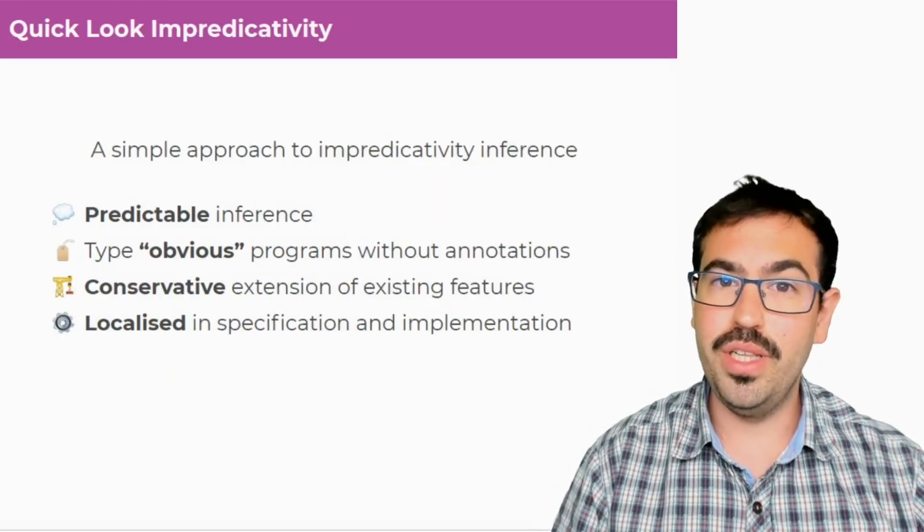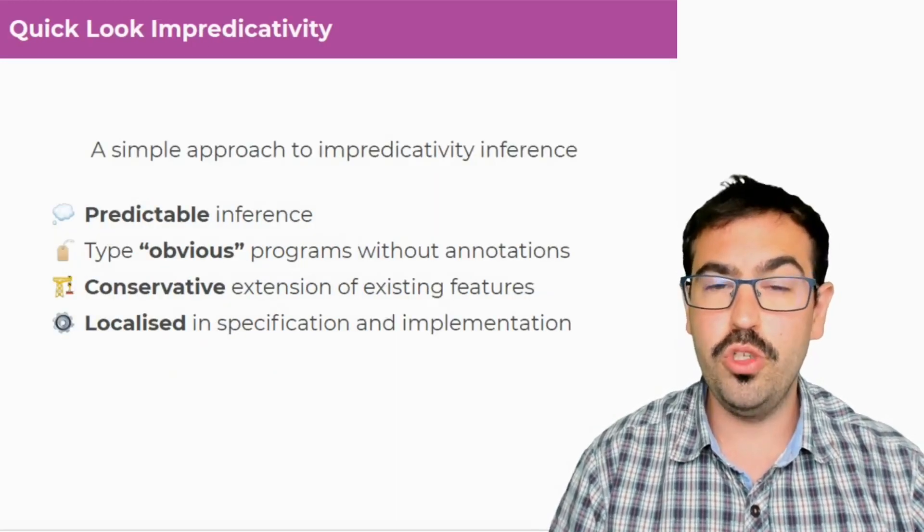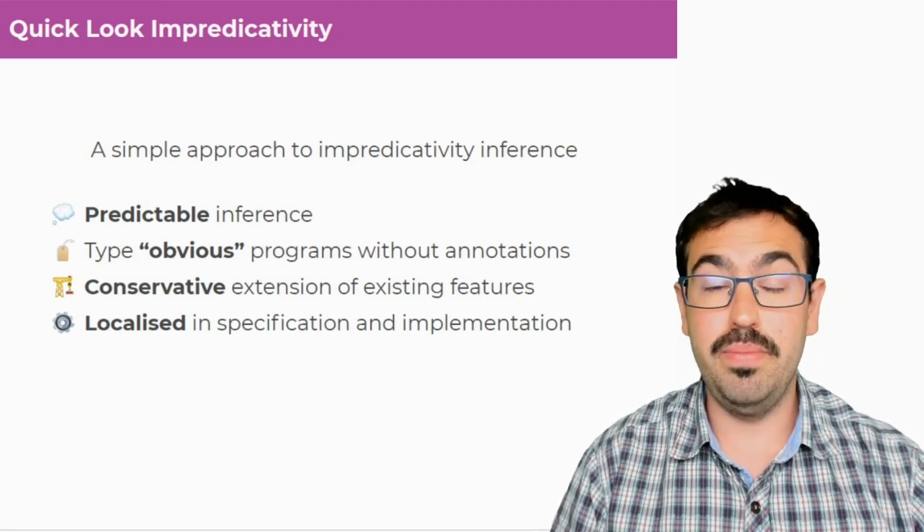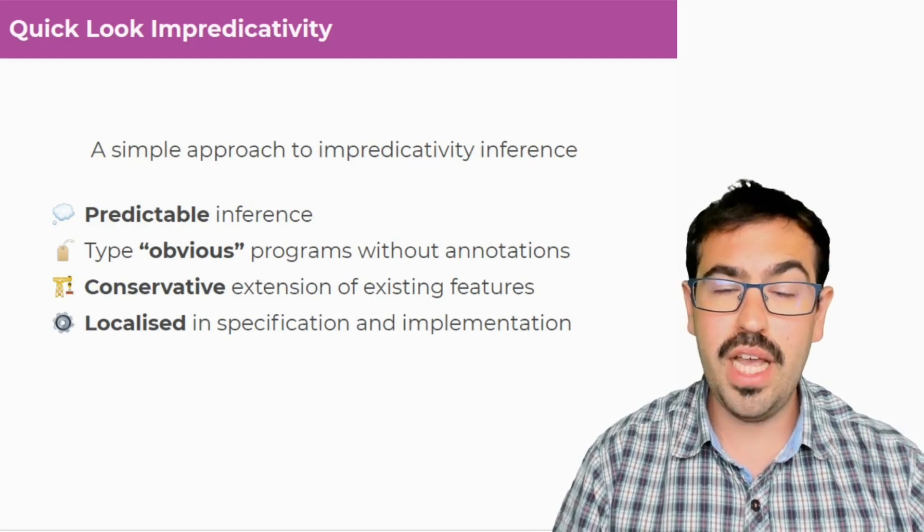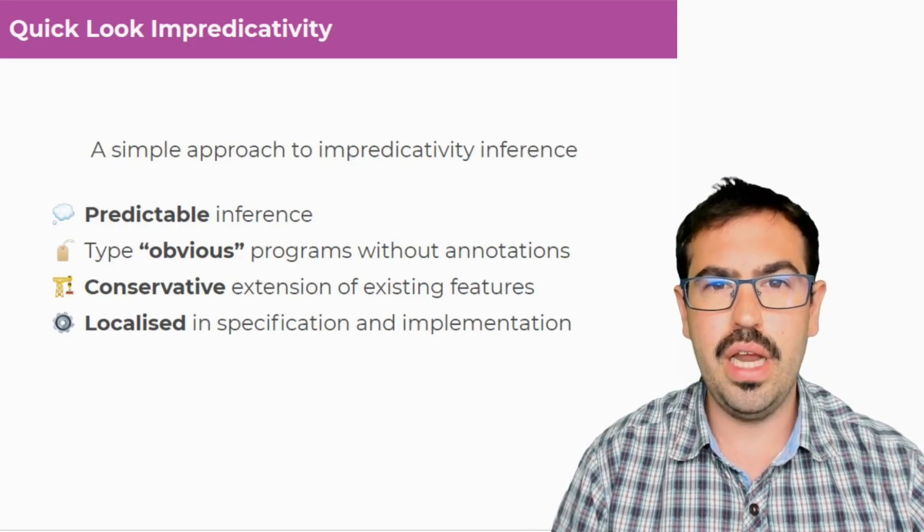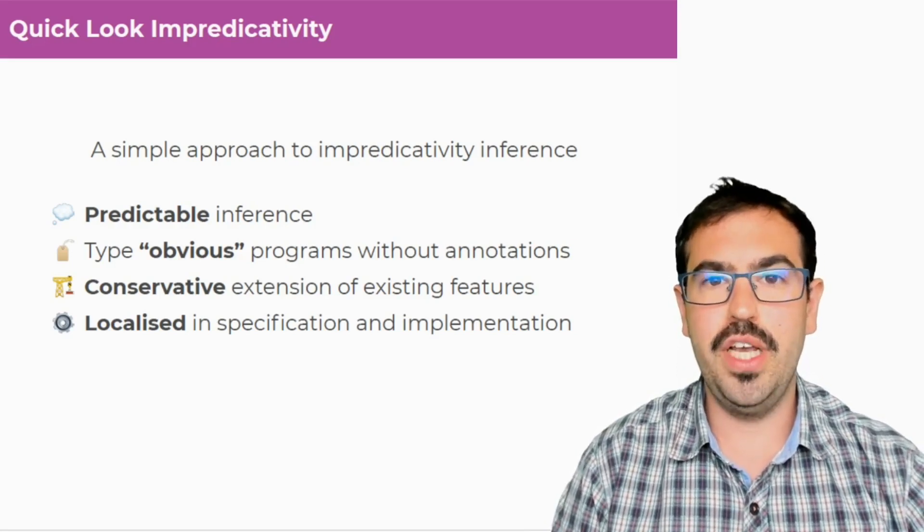In summary, QuickLook impredicativity is a simple approach to impredicative inference which tries to be predictable, but yet type as many obvious programs as possible without annotation. And it's also a conservative extension to what is already there and very localized in the specification and implementation.